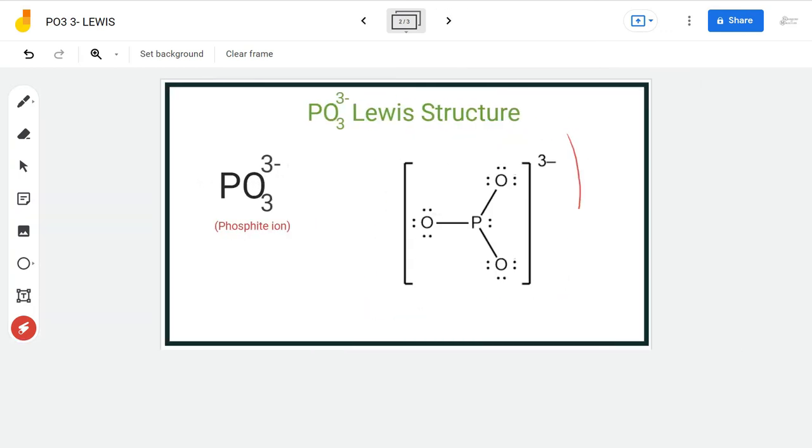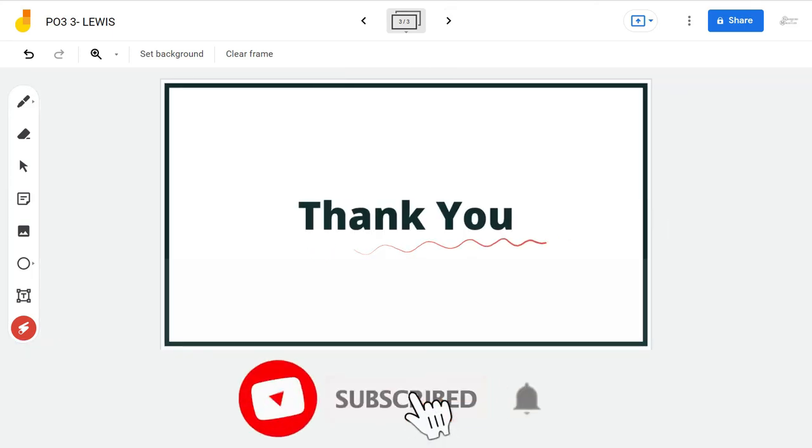Thus, this is the final Lewis structure of PO3 3- ion. For more such videos, make sure to subscribe our channel and thank you for watching.